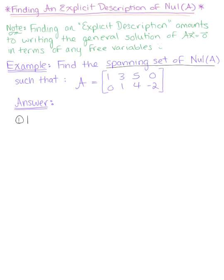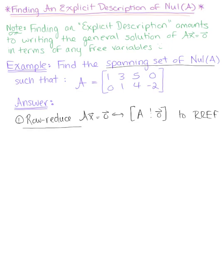To do that, we want to row reduce the homogeneous equation. So matrix A times vector x equals the zero vector, but we're going to convert it to its equivalent augmented matrix. We want to row reduce the augmented matrix to row reduced echelon form. So we have matrix A: 1, 3, 5, 0 and 0, 1, 4, negative 2. You can either incorporate a column vector for the zero vector or leave it just as matrix A.